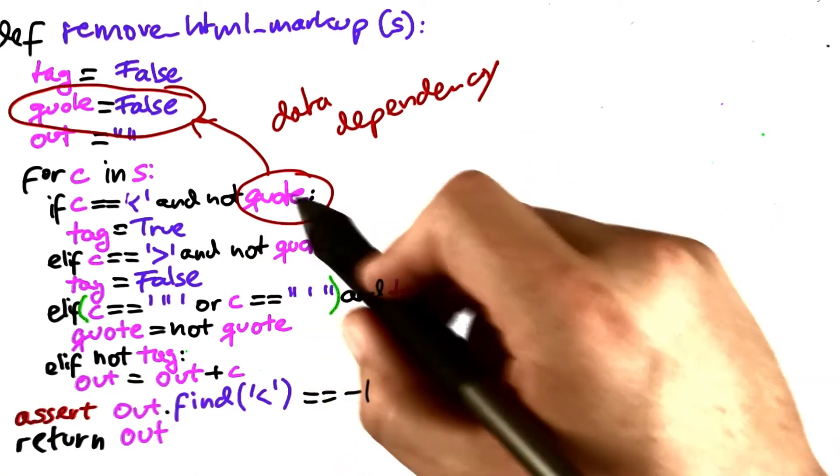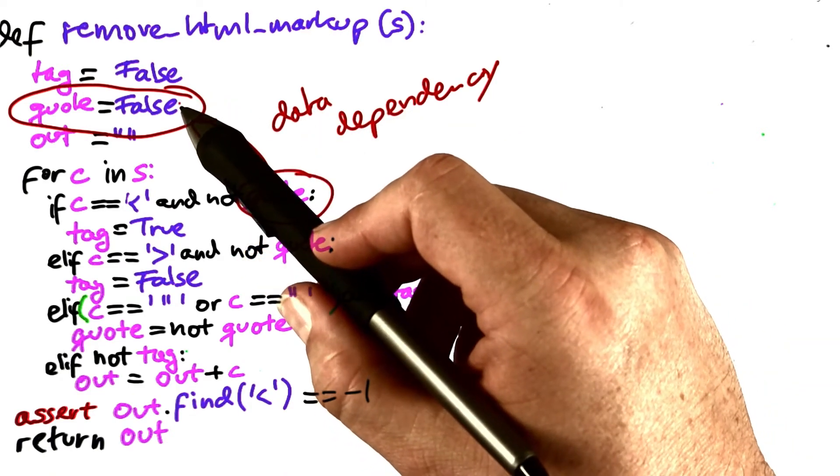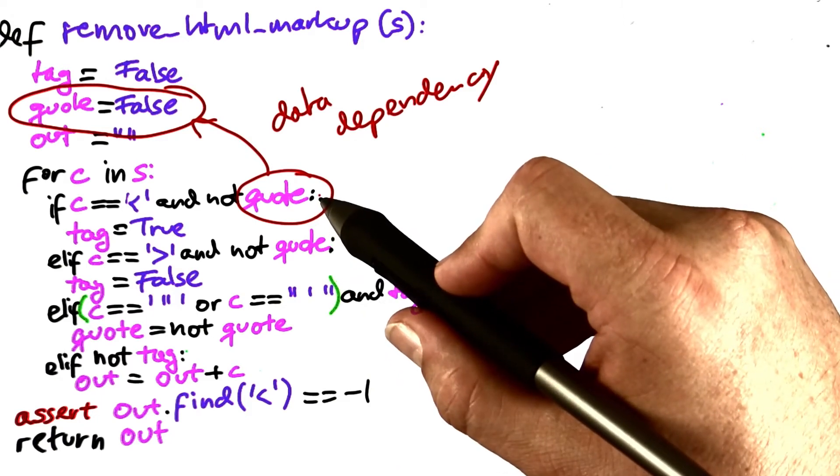For instance, the statement would be data dependent on that earlier statement. Because here, quote is being written and here, quote is being read.